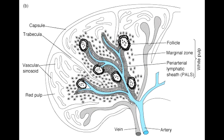Where are the T cells found in the spleen? The T cells are found in the peri-arterial lymphatic sheath, also known as PALS, within the white pulp of the spleen. Where are the B cells found? The B cells are found in the follicles within the white pulp of the spleen.